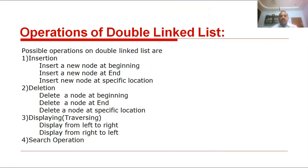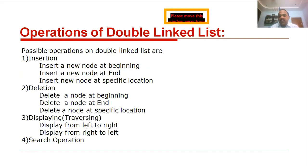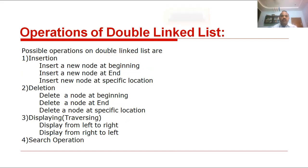These are the operations on double linked list: insert a node at the beginning, insert a node at the end, and insert a node at any position of the double linked list. Same deletion operations also, then display. The difference between single linked list and double linked list is that single linked list is a one-way list, while double linked list is a two-way list — backward and forward traversals are available, from left to right and right to left.